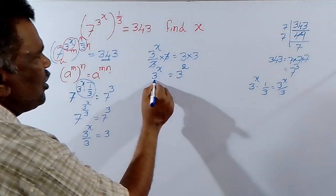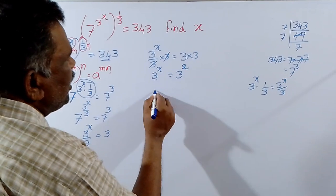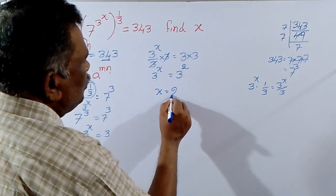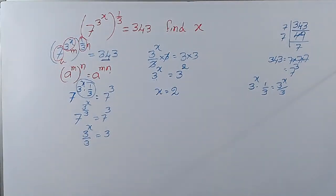Now here the bases are equal, then exponents are equal. So x is equal to 2. x value is 2.